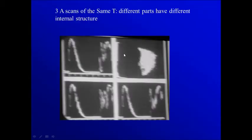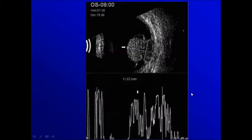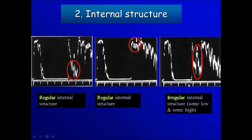Or in the same lesion, in one sector you get high spikes and in another sector you get medium or low spikes. In this example, we have an irregular decrease in the spike — this is a regular internal structure. But here we have low spikes, then high spikes, then low spikes — so this is an irregular internal structure.